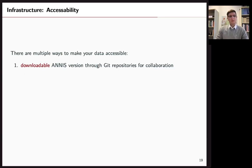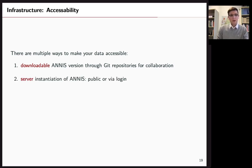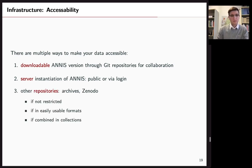We make this accessible as a downloaded version in GitLab because GitLab allows for collaboration, as we have seen. ANNIS will be included in this download. But you can also install a server instantiation and make your corpus available publicly or via login. This might also be coming in the future, maybe for CoCoYum. And you might also use other repositories, of course, Archives or Zenodo. But then it would be best in our view to not restrict it, to make it easily usable and to combine it into collections of one language.